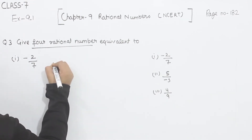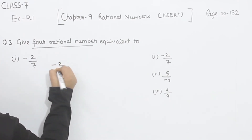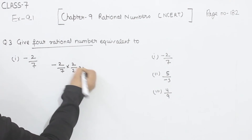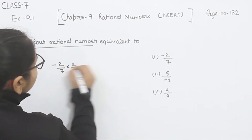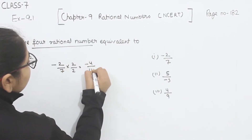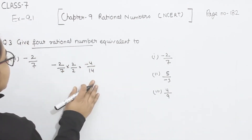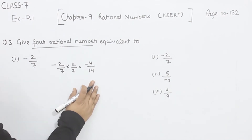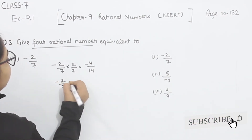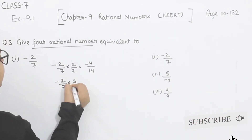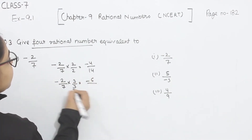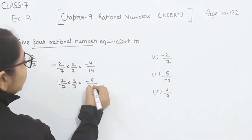First, I am going to multiply minus 2 by 7 by 2 — that gives minus 4 by 14. This is the first equivalent rational number. Now, again multiplying by 3 — that gives minus 6 by 21.